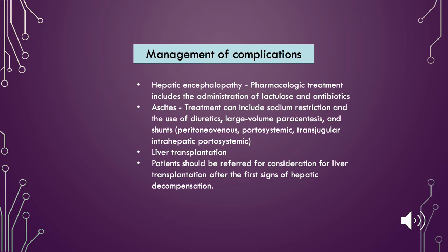For the management of complications: for hepatic encephalopathy, pharmacologic treatment includes the administration of lactulose and antibiotics. For ascites, treatment can include sodium restriction and the use of diuretics, large volume paracentesis, and shunts — peritoneovenous, portosystemic, transjugular intrahepatic portosystemic. For severe conditions, liver transplantation may be necessary. Patients should be referred for consideration for liver transplantation after the first signs of hepatic decompensation.